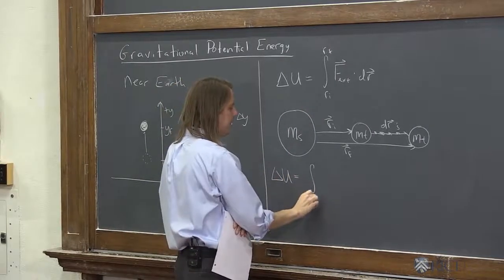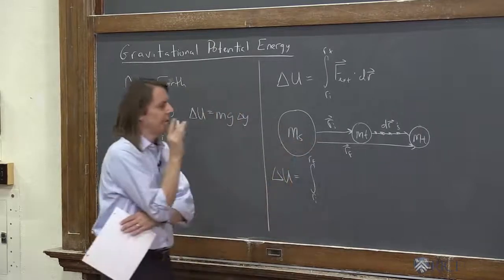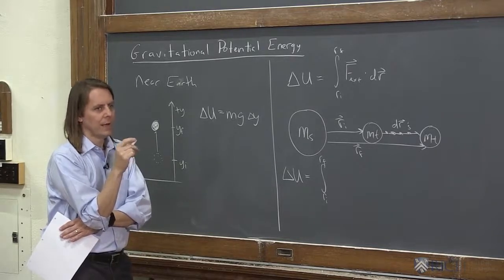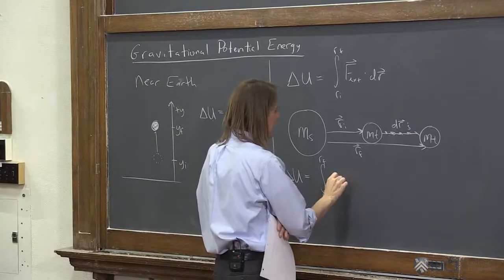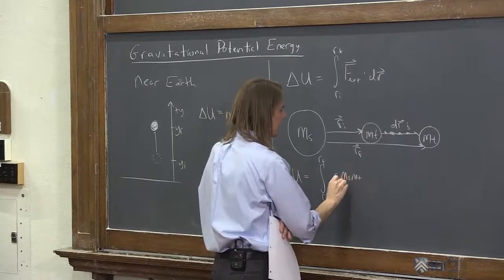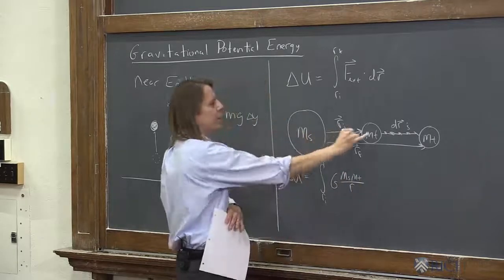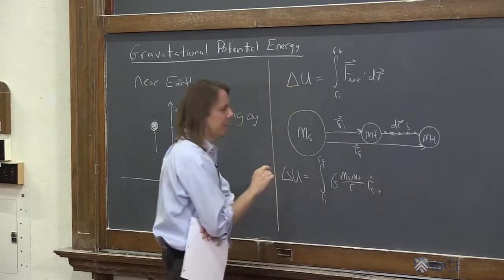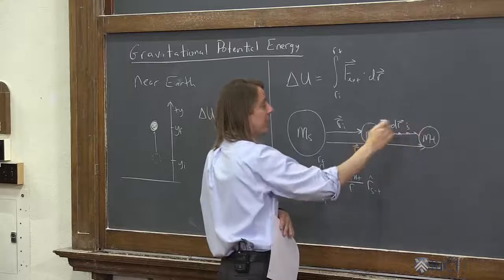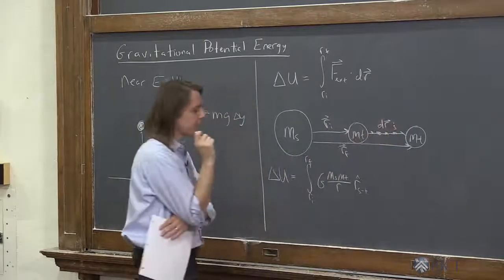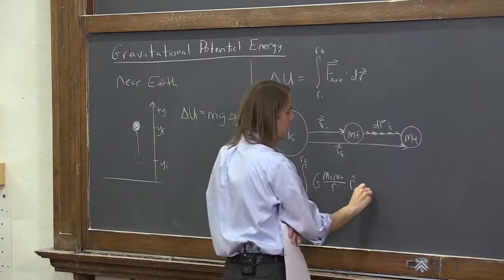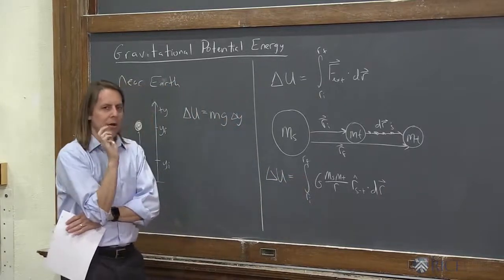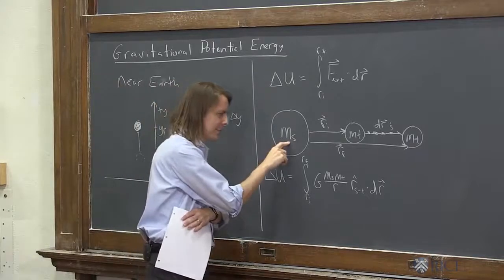The change in potential energy is the integral from initial r to final r. What is that force? Well, we know it's Gm₁m₂ over r squared, r-hat. So let's write that: G m source m test over r squared, going from ri to rf, r-hat source to test. That's the unit vector pointing that way, from the source to the test, dotted with dr. So here's our first minus sign to think about. Is there a minus sign there?